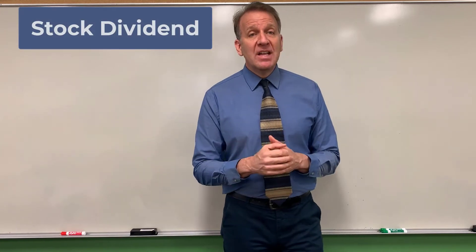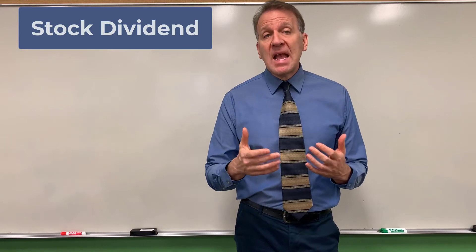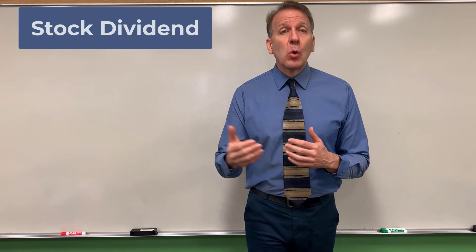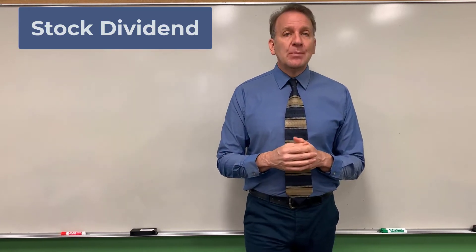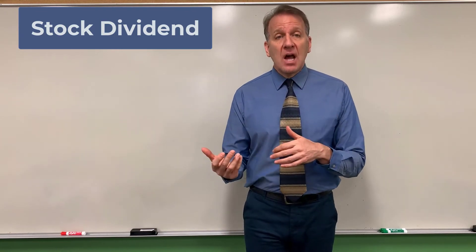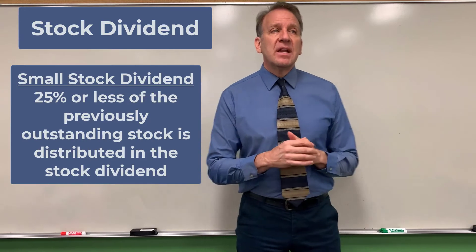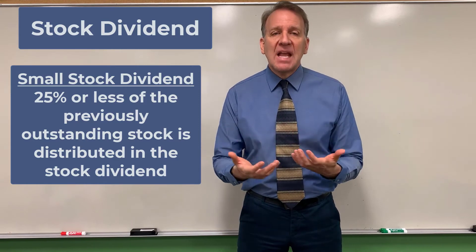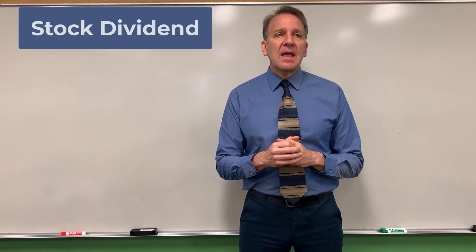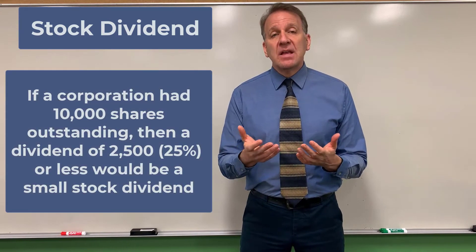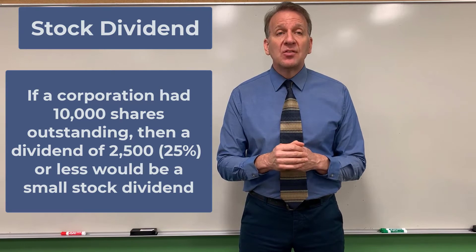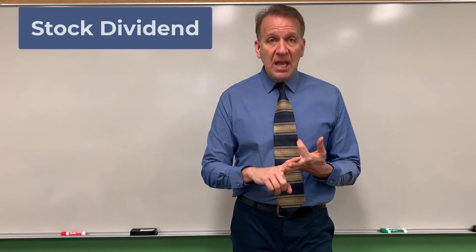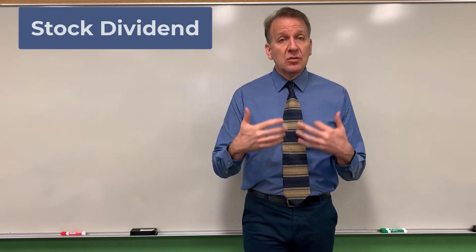Another type of dividend is a stock dividend. Instead of paying out cash to shareholders, the corporation pays a dividend in stock. There are two types: a small stock dividend and a large stock dividend. A small stock dividend is when they pay out 25% or less of currently outstanding shares. For example, with 10,000 shares outstanding, distributing 2,500 or fewer would be a small stock dividend. We use the same three dates — declaration, record, and payment — but with stock instead of cash.